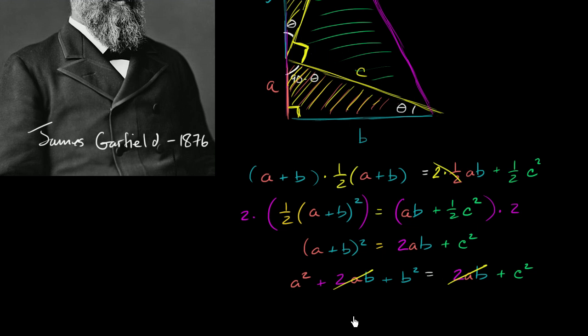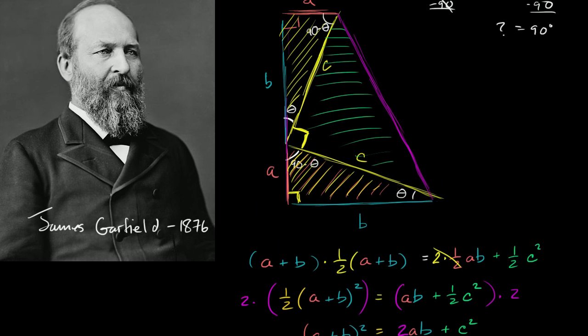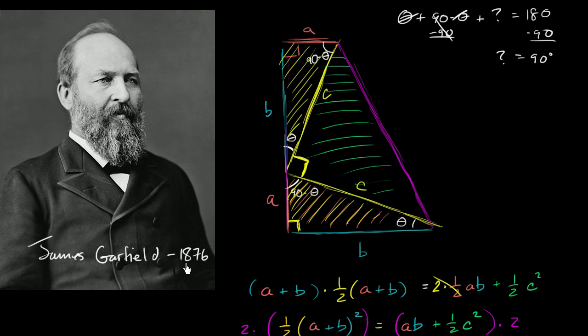You are left with the Pythagorean theorem. You're left with a squared plus b squared is equal to c squared. Very exciting. And for that, we have to thank the 20th President of the United States, James Garfield. This is really exciting because the Pythagorean theorem was around for thousands of years before James Garfield, and he was able to contribute just kind of fiddling around while he was a member of the US House of Representatives.